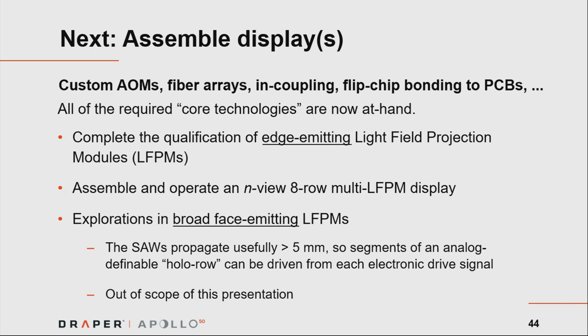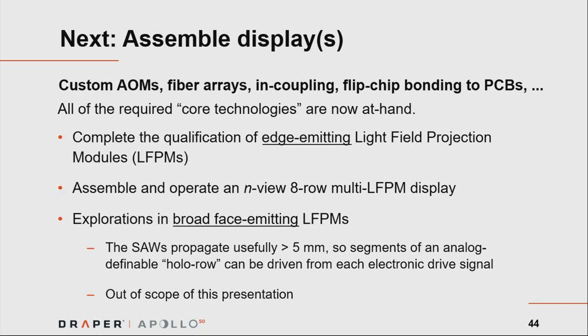The interesting thing is that these SAWs — these programmable holograms — propagate many millimeters before dying out. The analogy is rippling a bed sheet in a very complex way; the wave flies along at 3,600 meters per second, and when that hologram is in the position you need, you strobe it with a laser and a light field emerges from the system. That is outside the scope of this presentation. Thank you very much for your time.